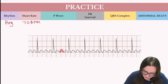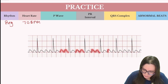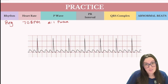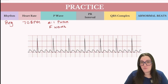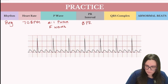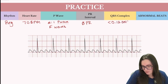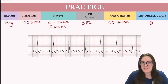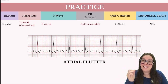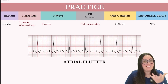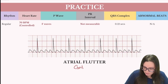Next, taking a look at our P waves — we actually have extra P waves compared to our previous rhythm. In this case, we're going to have a 2-to-1 P wave pattern, and these are also known as F waves. Because of the presence of F waves, we're not going to have a measurable PR interval. Our QRS complexes look very narrow and normal — less than 0.12 seconds — and there are no abnormal beats. The correct rhythm is atrial flutter. Being that we have a heart rate of 70 beats per minute, which is less than 100, we can call this controlled atrial flutter.